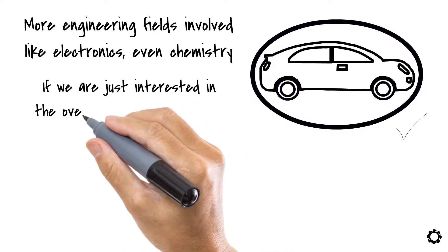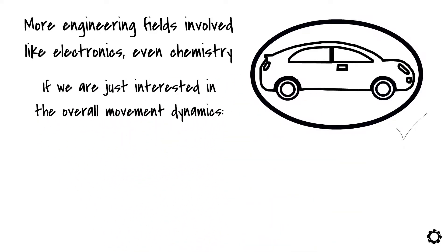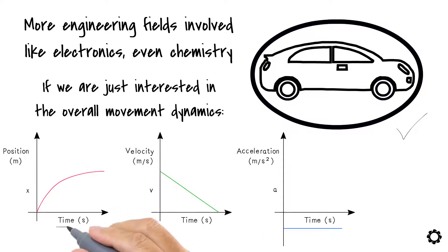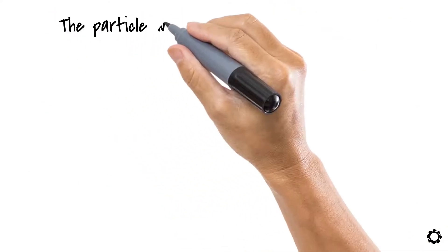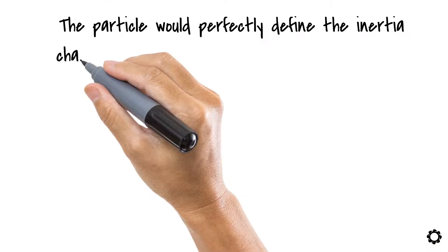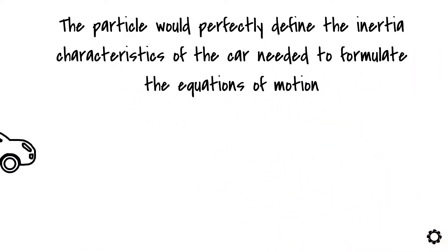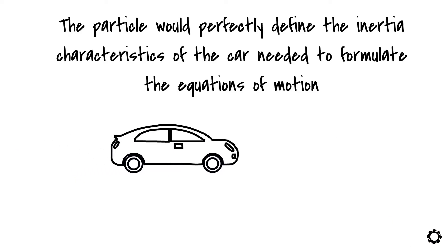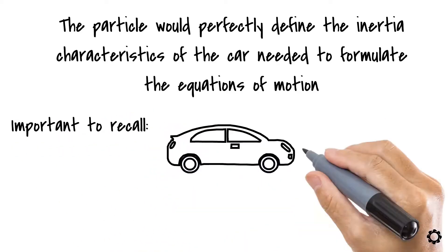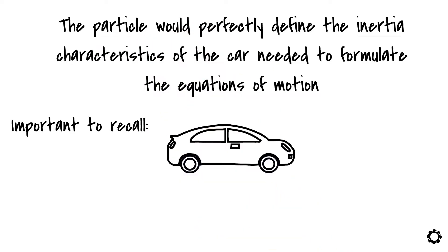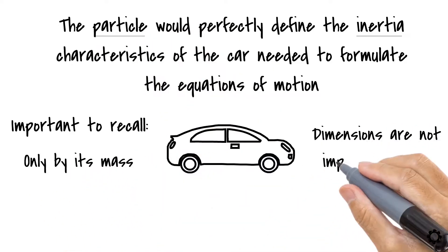If we are just interested in the overall movement dynamics of the car – its position, velocity and acceleration responses at a determined time – then we could use the particle example to get all this information. In this case, the particle would perfectly define the inertia characteristics of the car, needed to formulate the equations of motion, and thus, simulating the car trajectory. Right now, it's important to recall that the inertia of a particle is represented only by its mass. The particle's dimensions are not important at all.